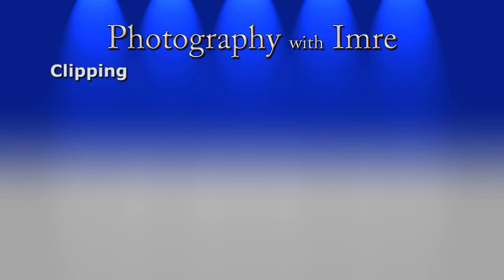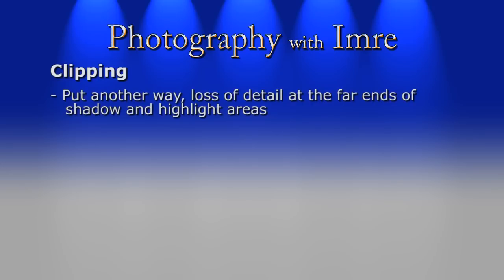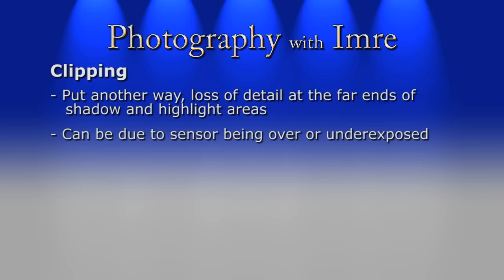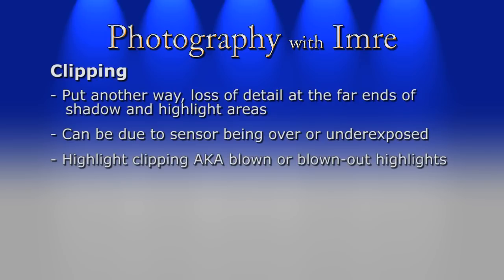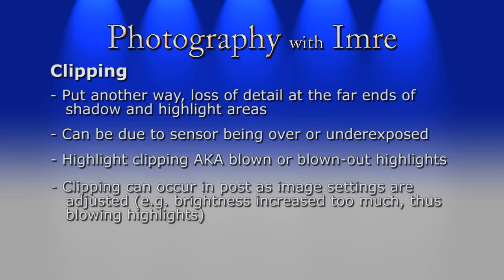You might have heard photographers talking about shadows or highlights being clipped. Clipping happens when the bounds have been reached in regard to what can be represented at the darkest and lightest extremes of an image. This may happen for a few reasons, but commonly the camera's sensor either isn't exposed to light long enough or is overexposed, which can cause shadow or highlight clipping respectively. Clipped highlights are also referred to as blown or blown out highlights. There are also data limitations to most file formats — for example, an 8-bit per channel image can clip more easily than a 16-bit per channel image.